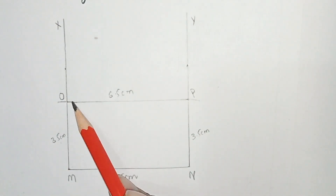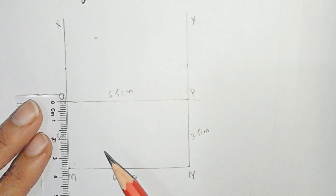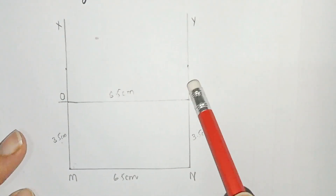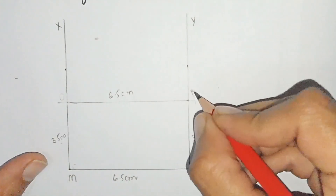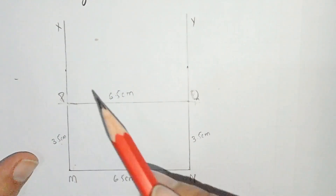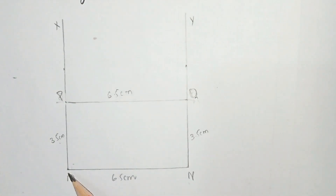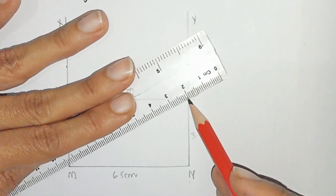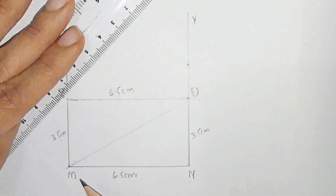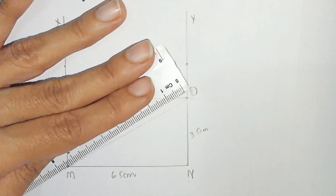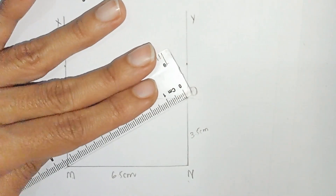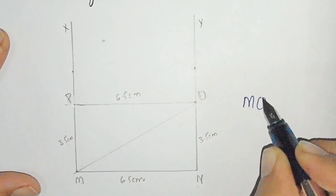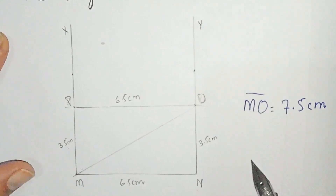Now we have to measure the length of diagonal MO. I am renaming the points — this is O and this is P, making rectangle MNOP. Drawing the diagonal MO — this diagonal is equal to 7.5 centimeters. MO is equal to 7.5 centimeters. Question number 12 is solved.